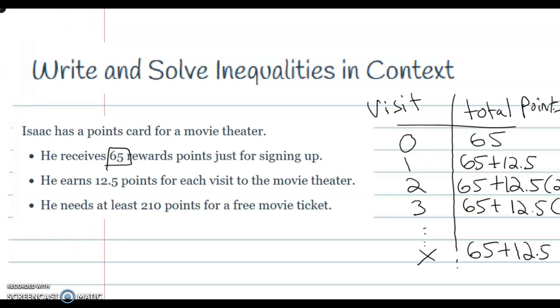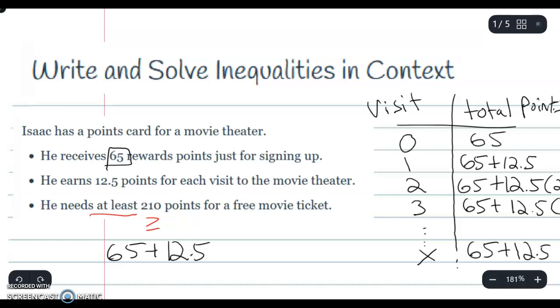But what we need to do is make sure that he has at least 210. That 'at least' is a key word here that lets us know it's going to be greater than or equal to. So it has to be greater than or equal to 210 points. So I'm going to write 65 plus 12.5 times the number of visits will have to equal or be greater than or equal to 210.